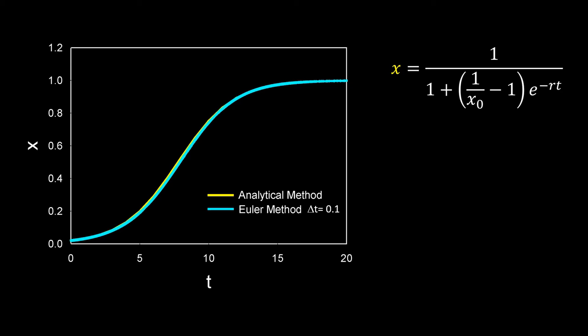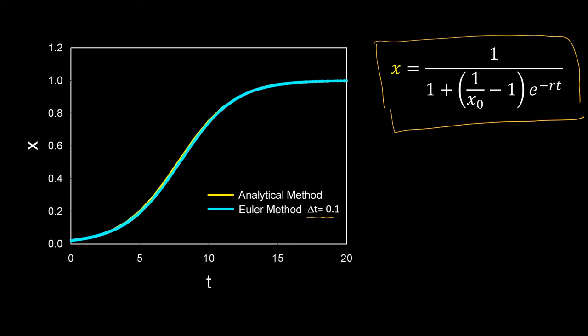Here I have plotted the data obtained from the numerical solution of the ODE by Euler's method. The blue line is the result using Euler's method with delta_t = 0.1. I have compared this with the analytical result — the function obtained by integrating the ODE is the exact solution. Replacing x0 and R and plotting gives the yellow line, which is the analytical or exact solution. You can see the exact solution is almost the same as the Euler's method result, but it will not always be the same — there is a trouble I will show.